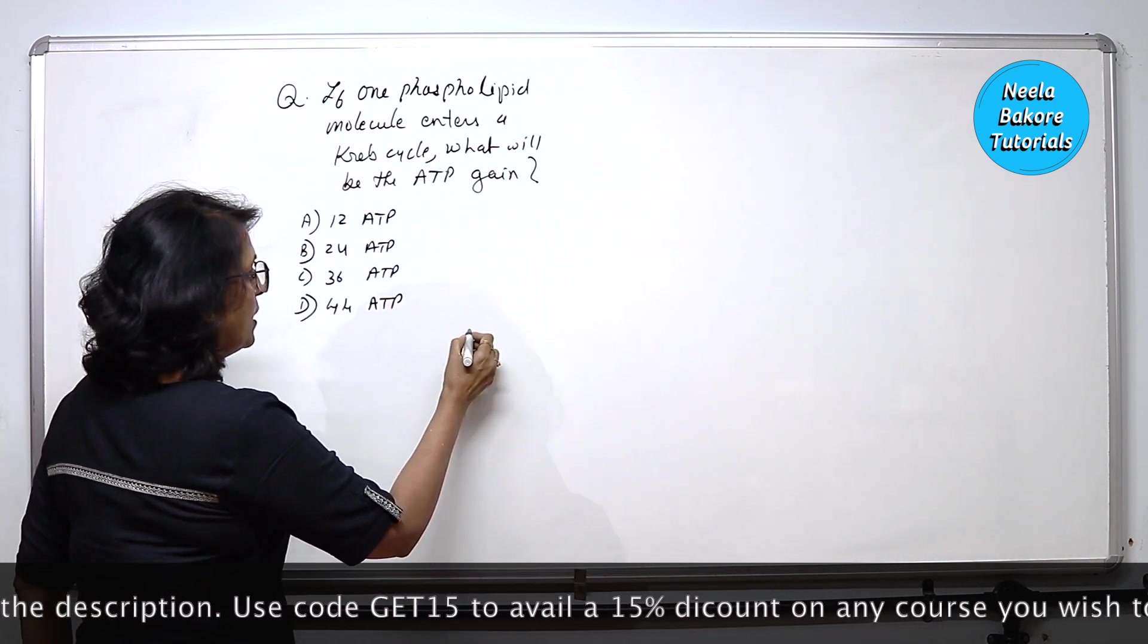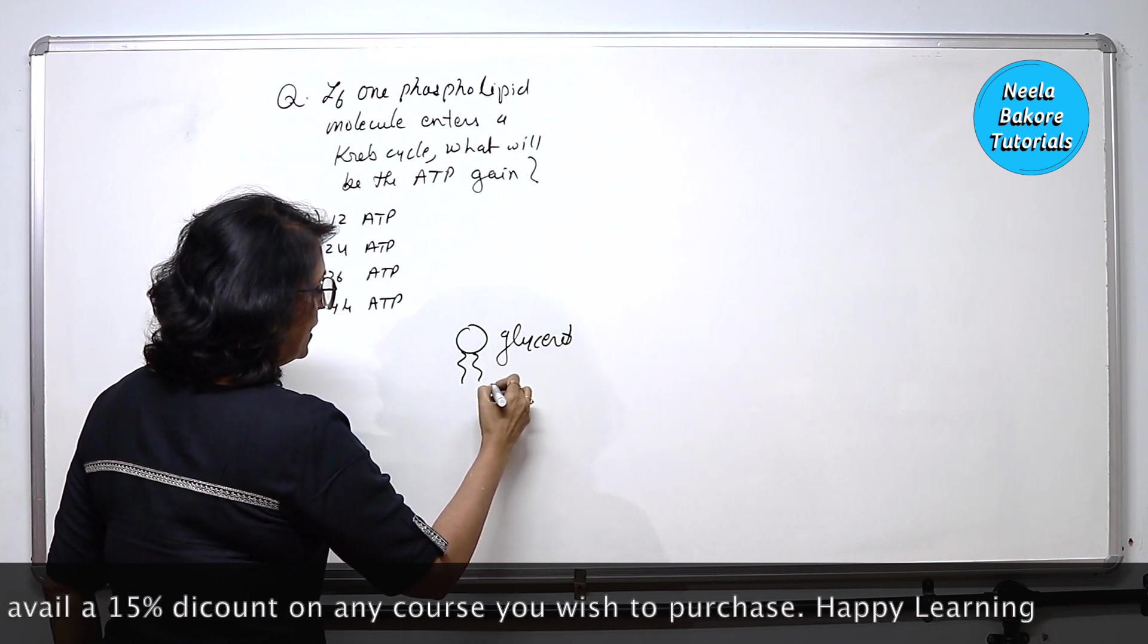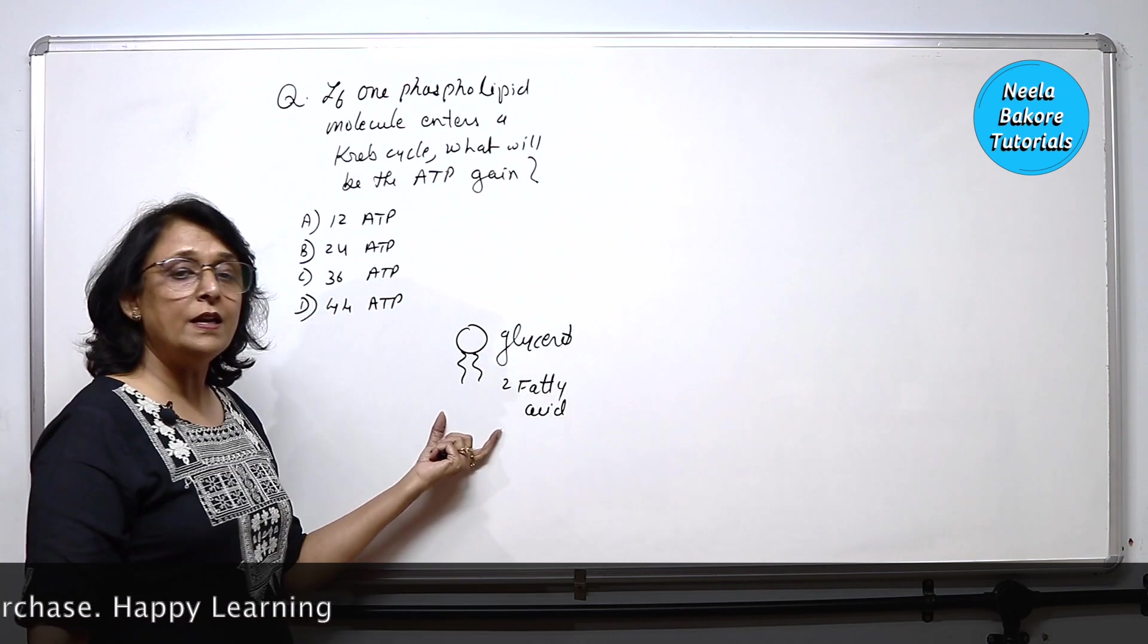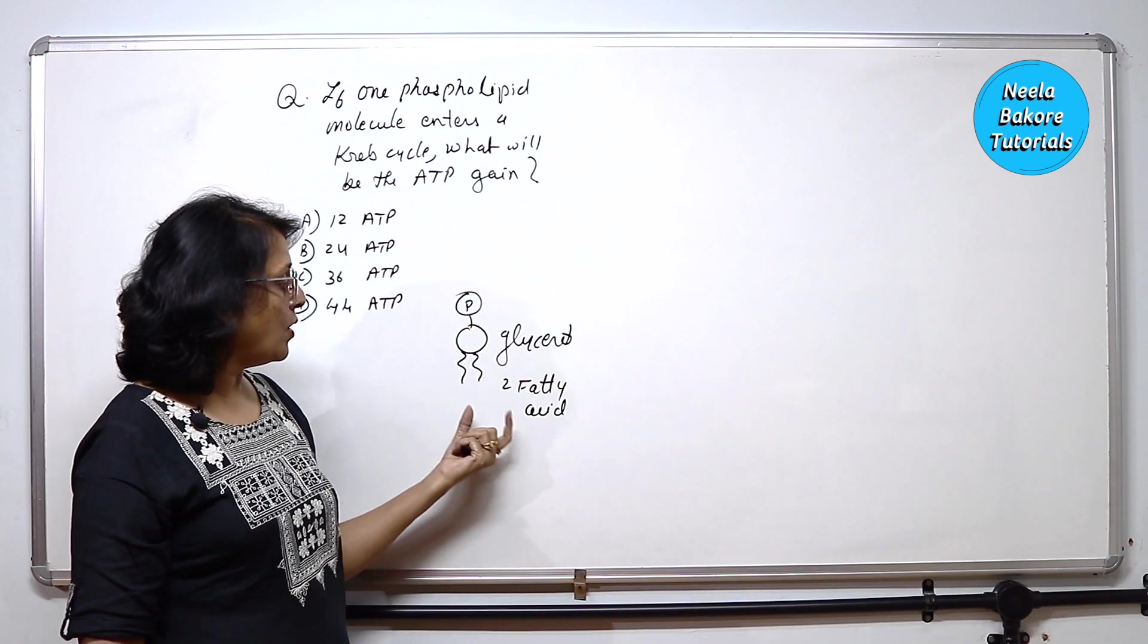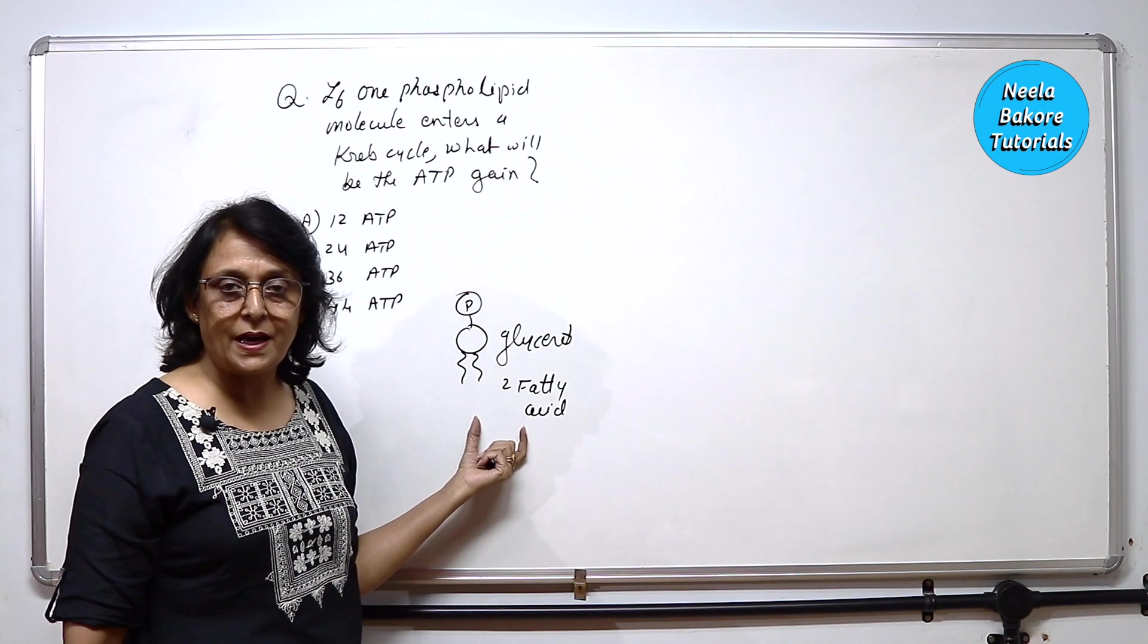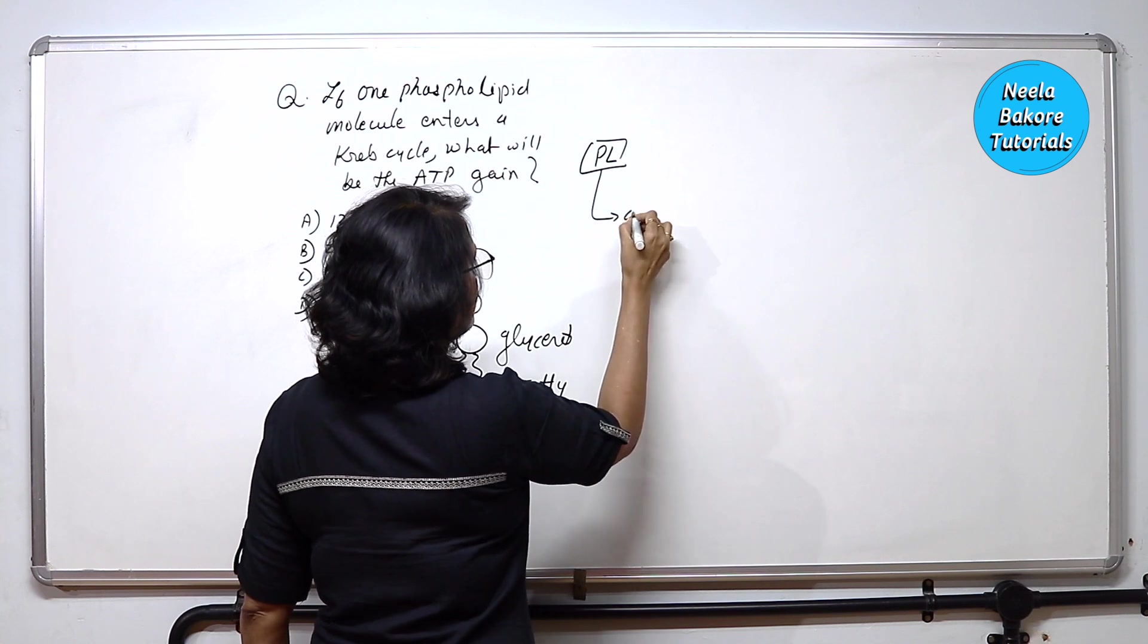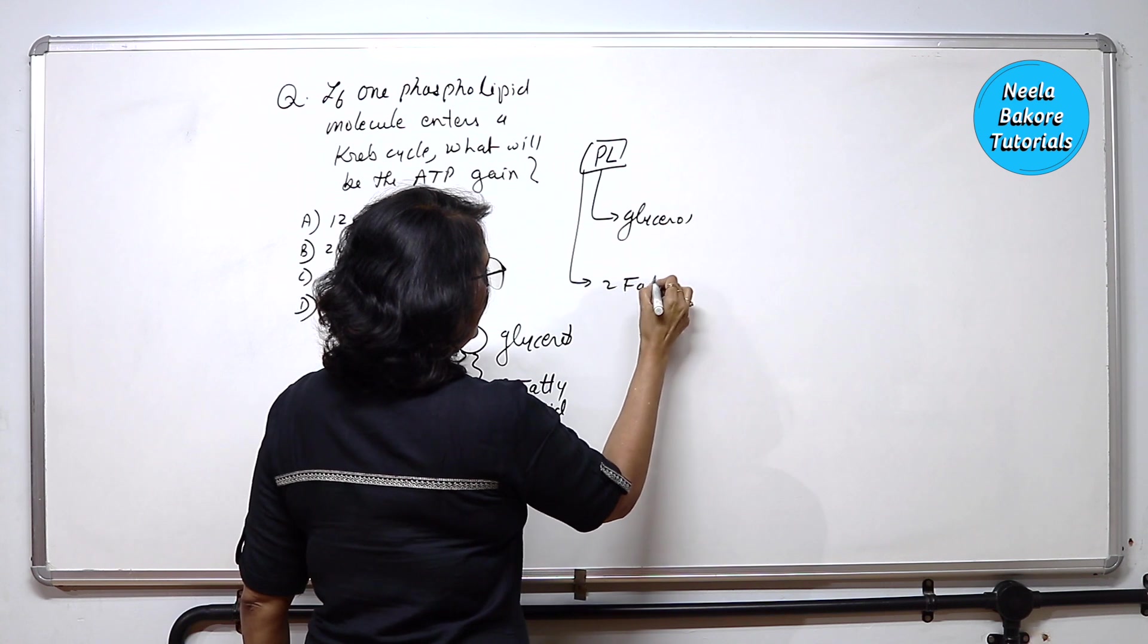Phospholipid molecule is made up of one glycerol and attached to it are two fatty acid tails or chains. So there is phosphate also, phospholipid. So this is glycerol, this is fatty acid. If one phospholipid enters the Krebs cycle, then what will happen? So let us say this is the phospholipid. Phospholipid is going to break down into glycerol and two fatty acids.